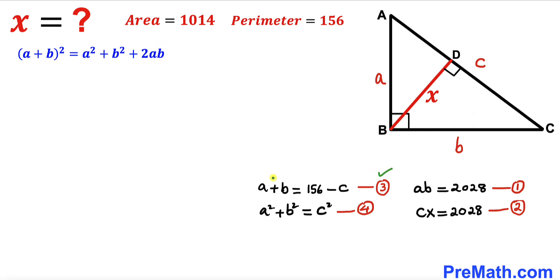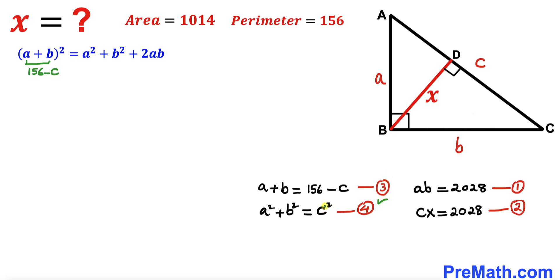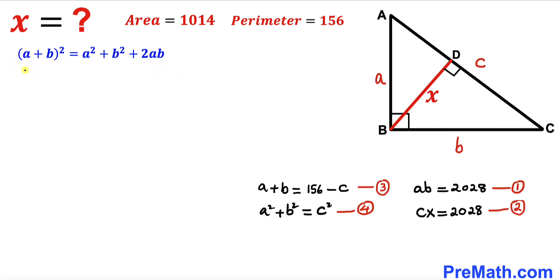From Equation 3, a plus b equals 156 minus c, so we replace (a plus b) with (156 minus c). From Equation 4, a squared plus b squared equals c squared, so we replace that term with c squared. From Equation 1, a times b equals 2028, so we replace ab with 2028. This gives us: (156 minus c) squared equals c squared plus 2 times 2028.